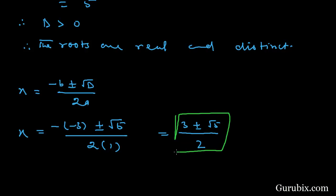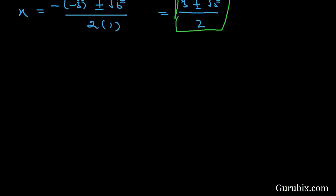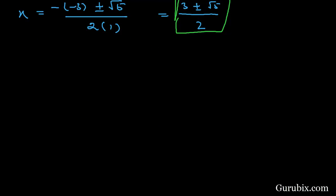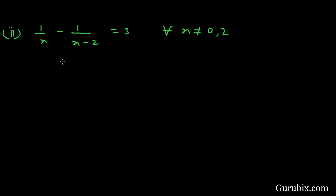This is the solution of the first part of the example. Now we shall move to the second part, which is: 1 over x minus 1 over (x minus 2) equals to 3.